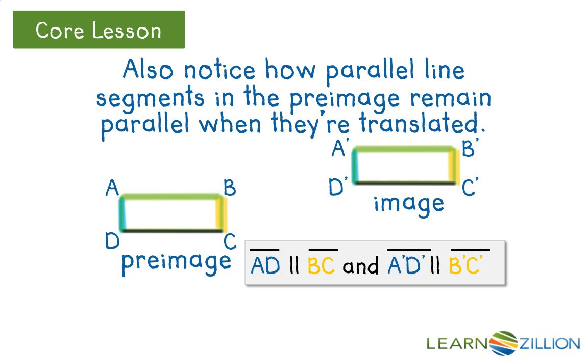Segment AD is parallel to segment BC in the pre-image, and nothing changes in the translated image. A'D' is still parallel to B'C'.